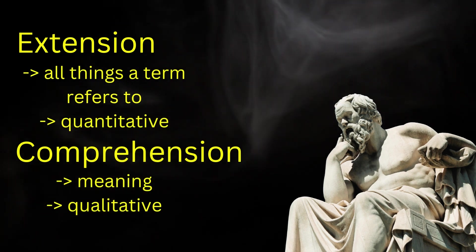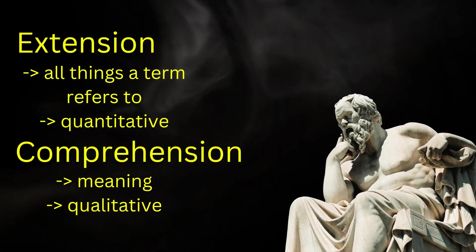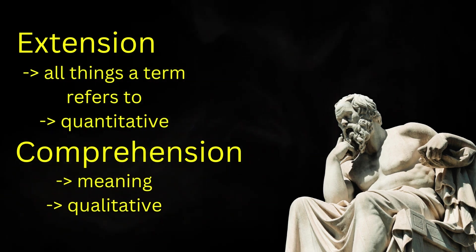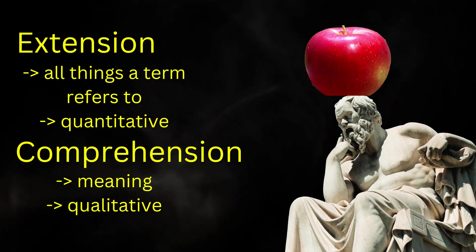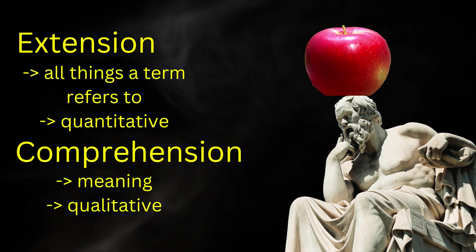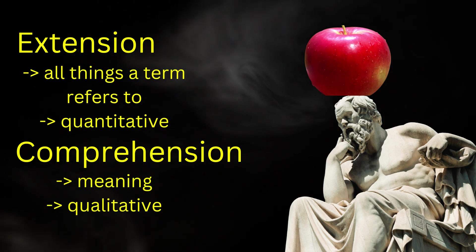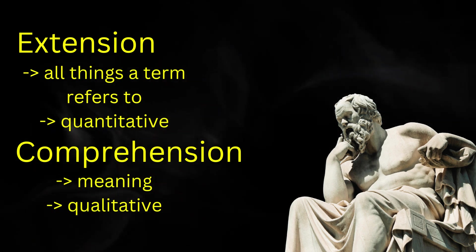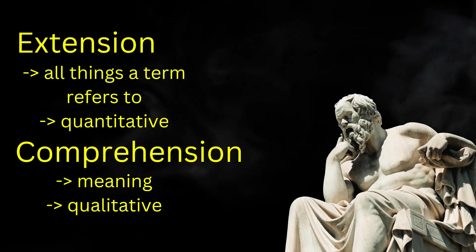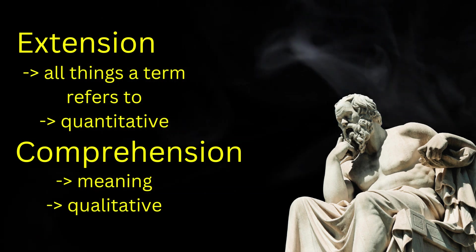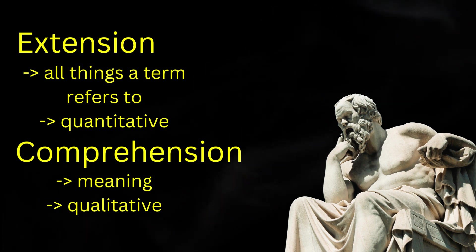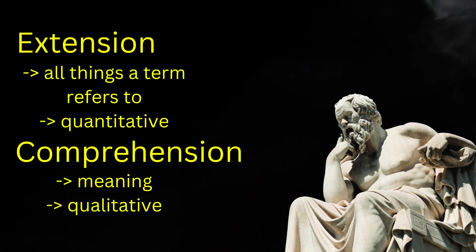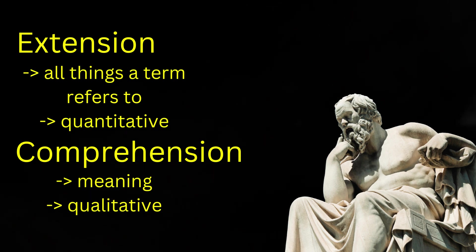Comprehension, also sometimes known as connotation, is the inner meaning of the term. All the things the term includes or comprehends within itself. For example, the comprehension of the term apple is the fruit of the malus domestica. Comprehension is qualitative, since it refers to meaning rather than number. Extension and comprehension vary inversely, since as we increase comprehension, we decrease extension. For example, fruit versus tree fruit versus orange. We decrease the extension as we increase comprehension or specificity of meaning.